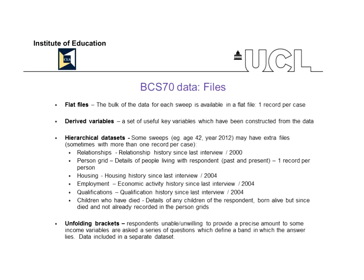For some sweeps, particularly the more recent ones like age 42, there may be extra files because we've done special exercises to record various histories like the relationship history, housing history, employment history, and qualifications. So you may find, especially with the age 42 survey, about eight files including all these separate bits of information. One thing that people find a little bit confusing in terms of nomenclature is the unfolding brackets file — that's where if we ask people what their income is and they're unable or unwilling to provide a precise amount, we ask a series of questions which defines a band into which the answer lies.